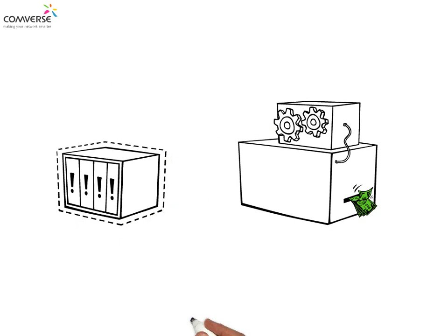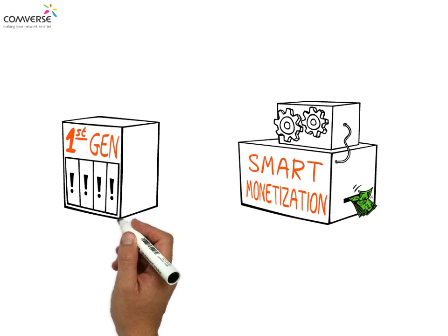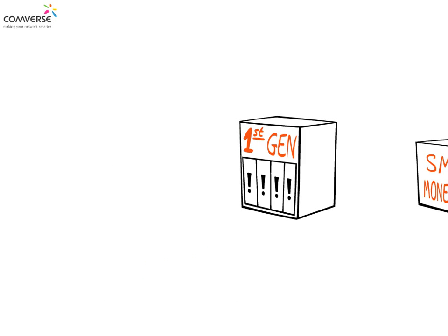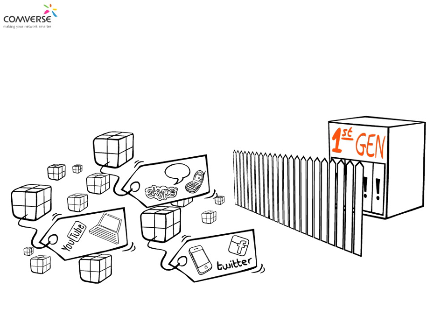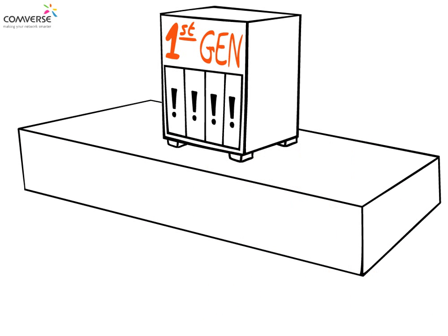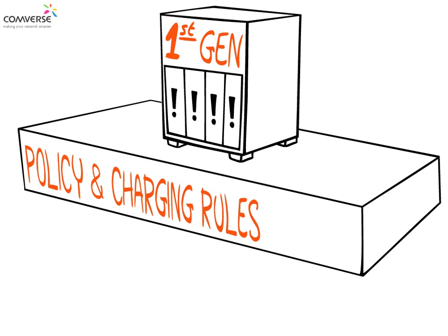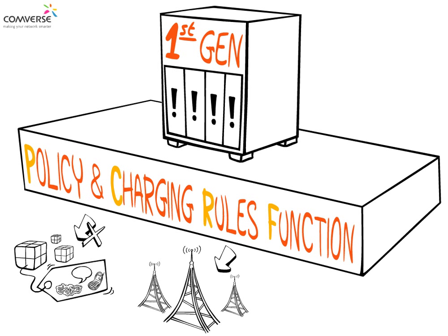Policy is indeed essential for implementing smart monetization schemes. Yet common first-generation policy solutions are inadequate, as they struggle with defining business-related scenarios. These legacy solutions are heavily based on the 3GPP standard called Policy and Charging Rules Function, or in short, PCRF. This standard is networking-focused and does not support the creation of business-oriented data policies.